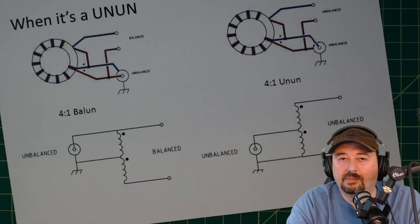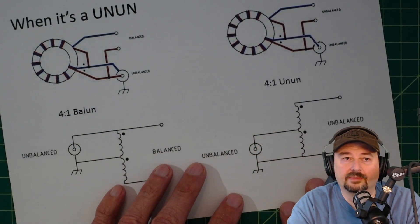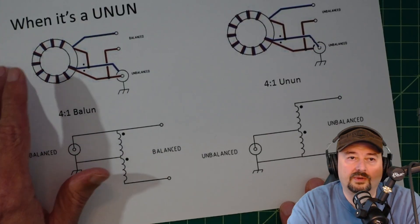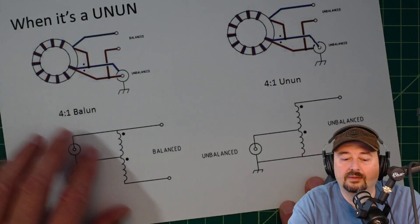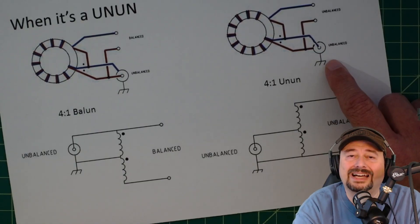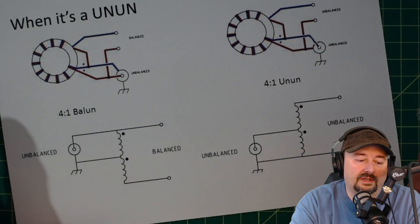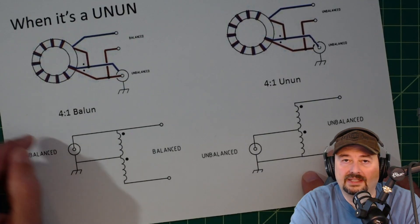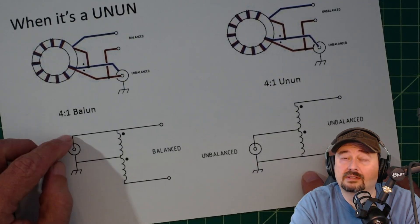Let's talk about why you would choose one of these over the other. What we're looking at on this side is a four to one balun. Over here is a four to one unun. When we talk about this, the balun is for connecting your unbalanced transmission line to a balanced load.